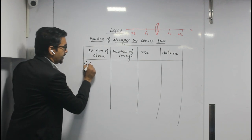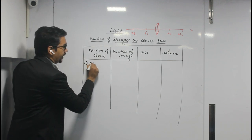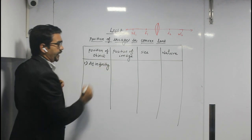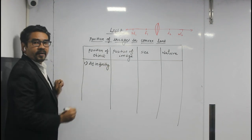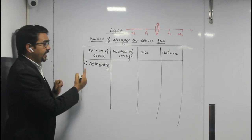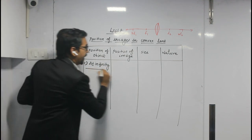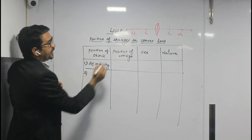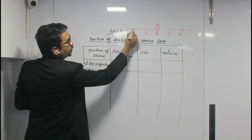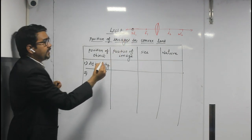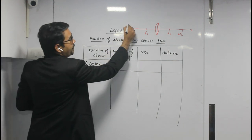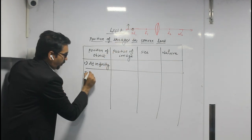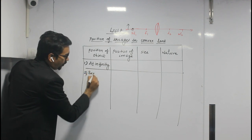The first position: the object is at infinity. The second position is object is beyond 2F1. So 2F1 is the reference point, and the object will be somewhere beyond 2F1.